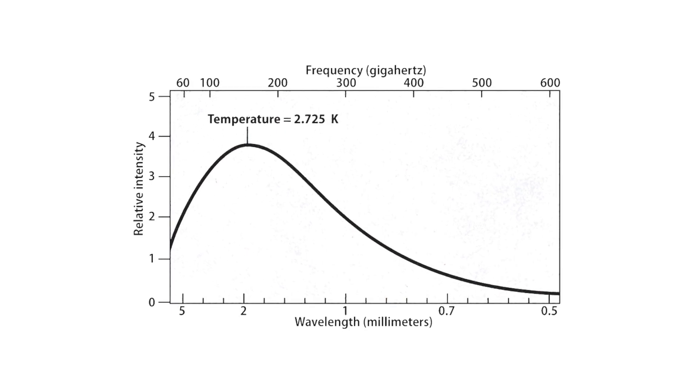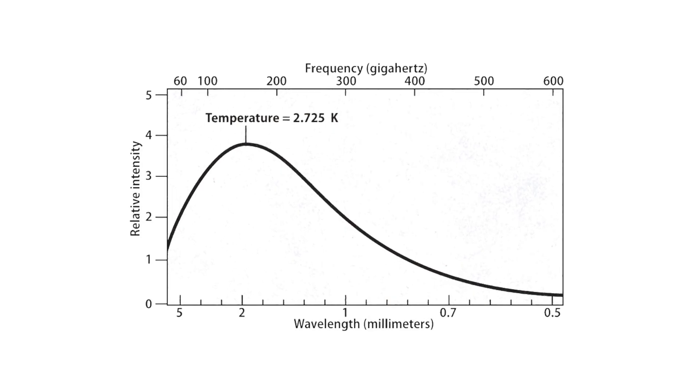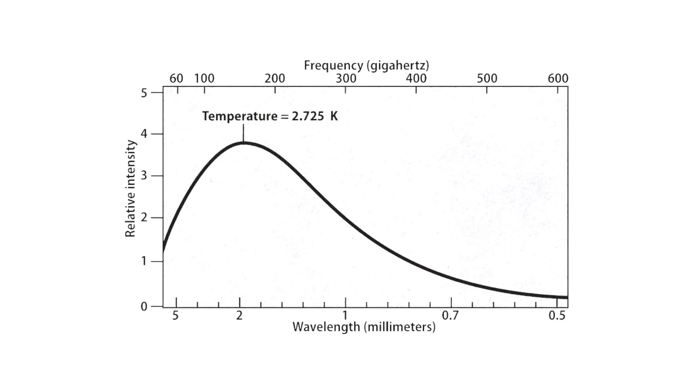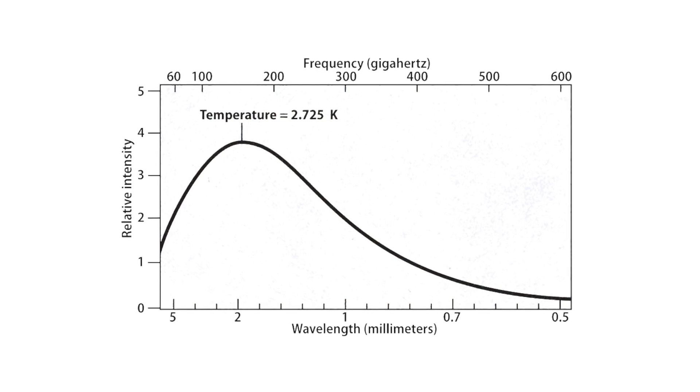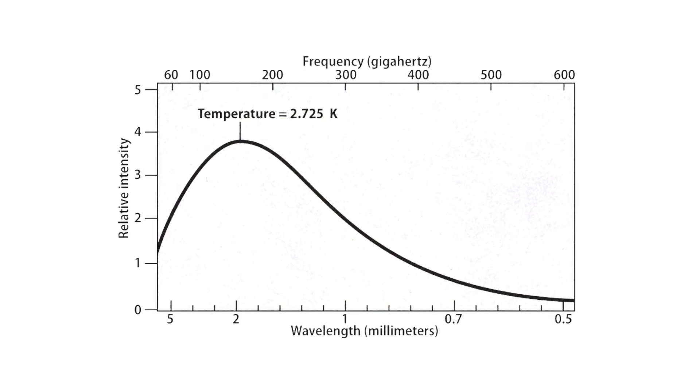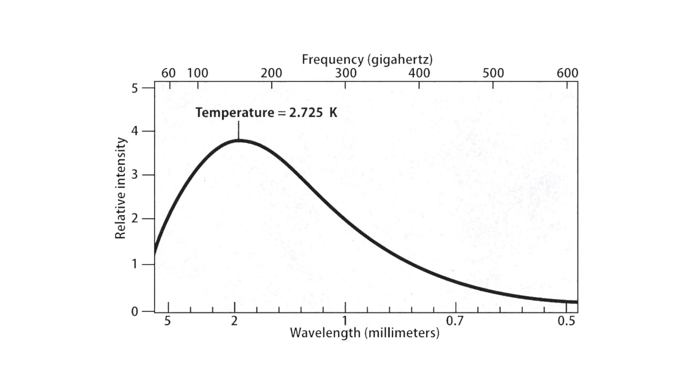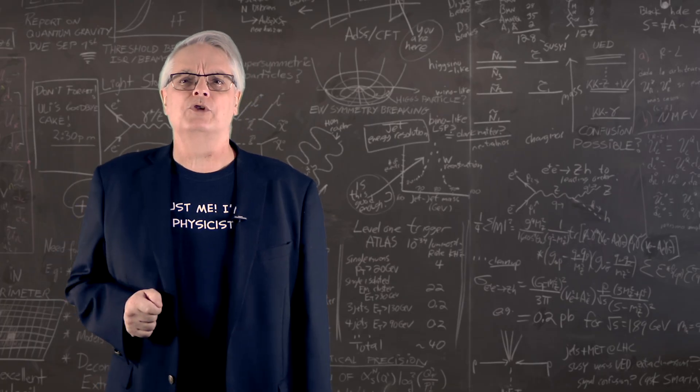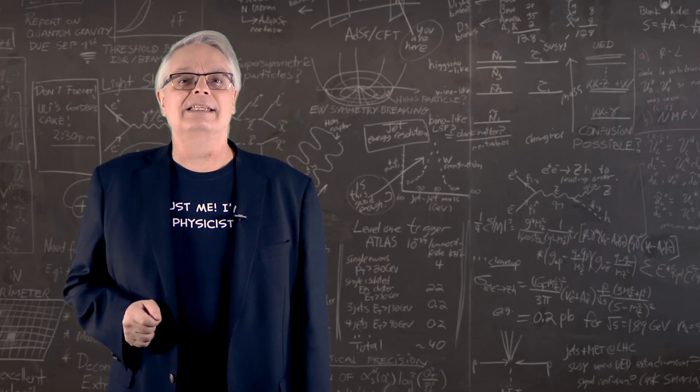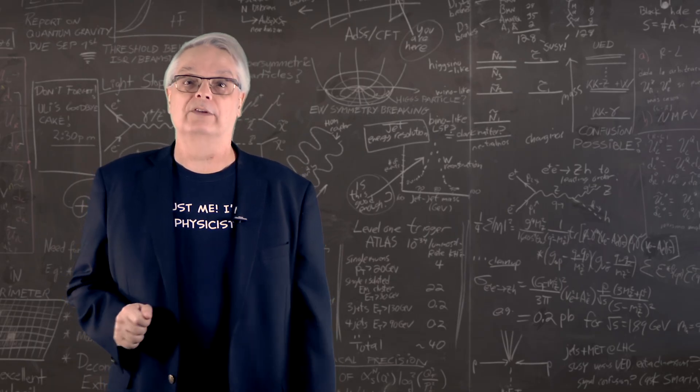Because of the expansion of the universe from then until the present day, the temperature of the afterglow of the Big Bang is now 2.7 Kelvin, or minus 450 degrees below zero Fahrenheit. That temperature is the same in every direction. Indeed, the CMB is a sphere around us.